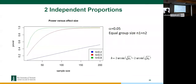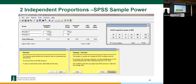This is another example showing how the power-sample-size relationship changes with effect size. Equal group sizes are always the most efficient design. If you want to do a study with unequal groups, you'll always need a somewhat larger study than you would with equal-sized groups.